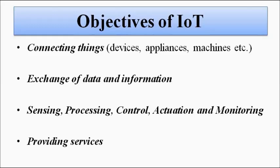IoT involves a little bit of each of the engineering branches. It has its links with instrumentation engineering, communication engineering, electrical engineering, electronics, and computer science — it has its links with everything. So the design of the IoT network has to be done on several levels.